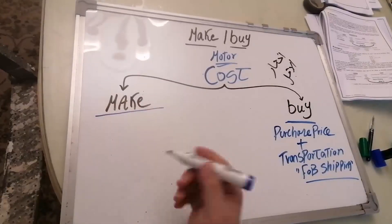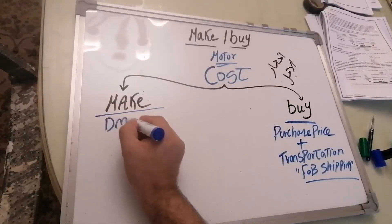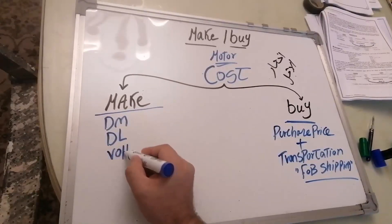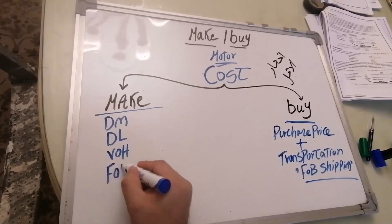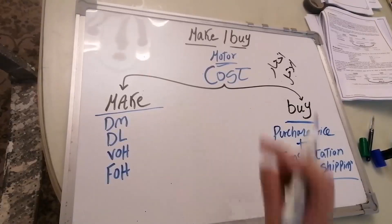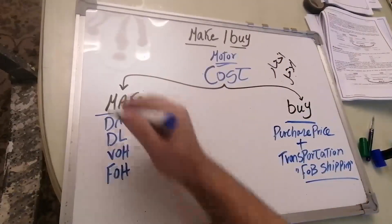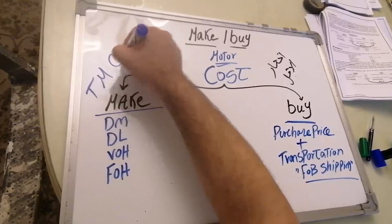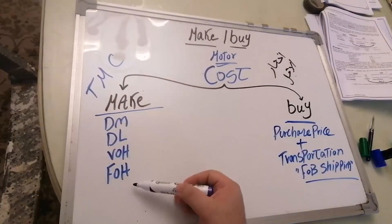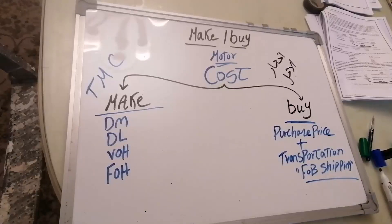The make cost includes: DM (direct materials), DL (direct labor), and VOH (variable overhead). What about FOH? We don't include selling and administrative expenses since those are admin costs and apply in sales situations. When talking about parts, we use total manufacturing cost: DM + DL + VOH. The FOH is the tricky part.